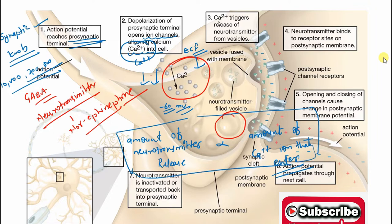Step three: calcium triggers the release of neurotransmitter from vesicles. Calcium interacts with specific proteins called release sites present on the vesicle surface. The vesicles are pushed toward the membrane, and in short, calcium triggers the release of neurotransmitter from vesicles. Step four: the neurotransmitter binds to receptor sites on the post-synaptic membrane.